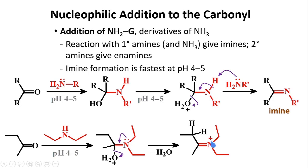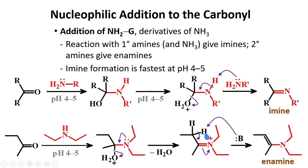To stabilize this compound, your base can take a proton that is present at the beta position. The electrons connecting this proton to the carbon will form the double bond. Electrons will go back to nitrogen and you will form your enamine. This is called an enamine because you have your amine moiety and you have your double bond — so this is an 'en' and this is an 'amine', so enamine.